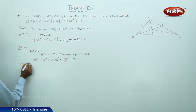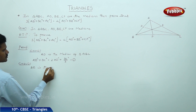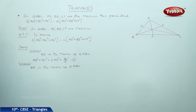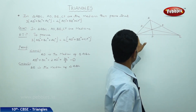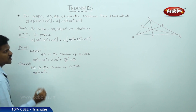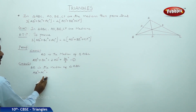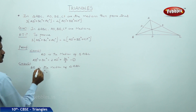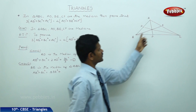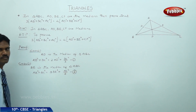Similarly, Case 2: BE is a median. Then AB² + AC² = 2·BE² + AC²/2. This is equation 2.